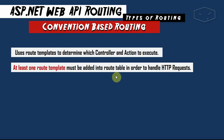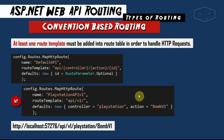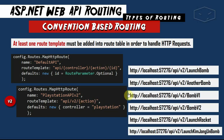An important thing to notice is that we can have multiple routes. In the second example, we have a template named PlayStationApiV1 with the route template api/v1, and the controller is fixed to PlayStaton with the action fixed to BombV1 — so we have this specific URI. The third example is PlayStationApiV2 with route template api/v2, which has a placeholder for the action while the controller defaults to PlayStation.